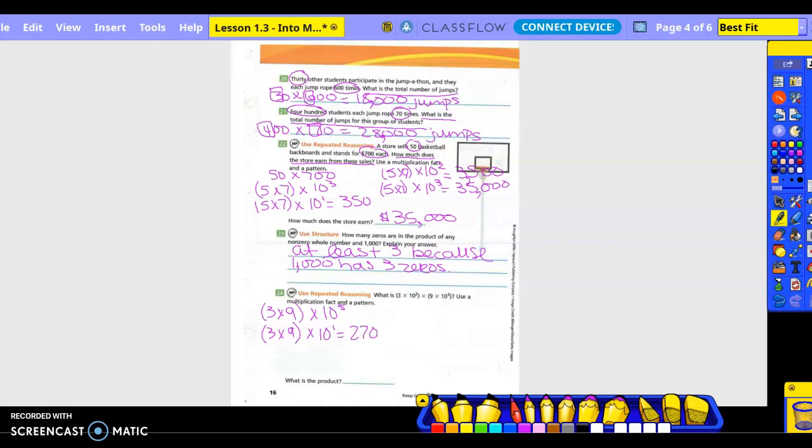27 and add 1 zero. So 3 times 9 times 10 to the second power would be 27 and add 2 zeros. Next one, 3 times 9 times 10 to the third power. So you'd write 27 and add 3 zeros, right? Next one,